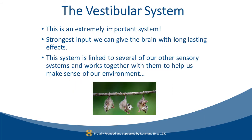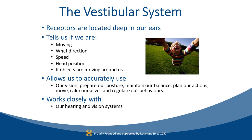If I had to pick a favorite sensory system, it would be the vestibular system. It is extremely important — the strongest input we can give the brain with long-lasting effects. This system is linked to several other sensory systems and works together with them to help us make sense of our environment. We receive information about gravity and movement in the receptors in our inner ear. If you've ever had an ear infection or inner ear issue, you know how greatly your balance was affected. The vestibular system tells us if we are moving, what direction, what speed, what our head position is, and if objects are moving around us. It allows us to accurately use our vision, prepare our posture, maintain balance, plan our actions, move, calm ourselves, and regulate our behaviors — all from one sensory system.